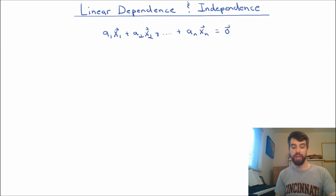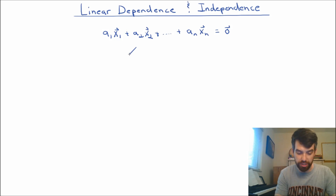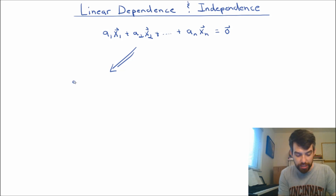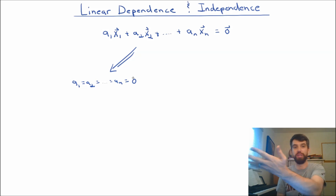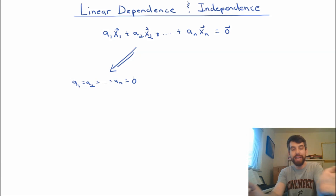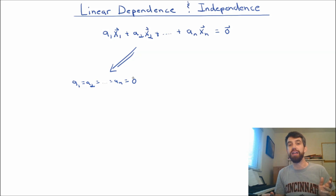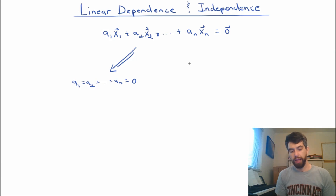Well, there are a couple of different cases here. One case is that a1 equals a2, and every single one of these coefficients, all the way to an, are equal to zero. That's a possibility — clearly the sum of zero times anything is equal to zero. So yes, we can always find some linear combination, but it's kind of a boring one.